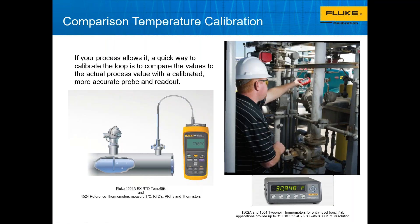Another popular method is comparison calibrations — you leave the probe in the process and take the signal off of it, comparing it to a more accurate handheld reference device. This example uses a 1524 reference thermometer. You connect to a nearby port, make a temperature reference measurement, compare what the process is telling you versus what this device reads, and make an adjustment to the transmitter. This lets you make a very accurate comparison while allowing your process fluid to be the temperature source.